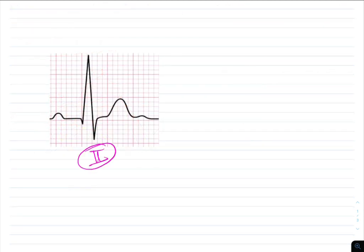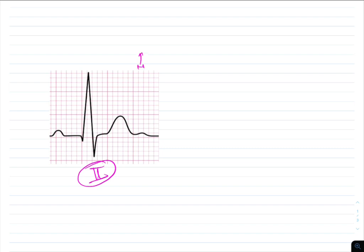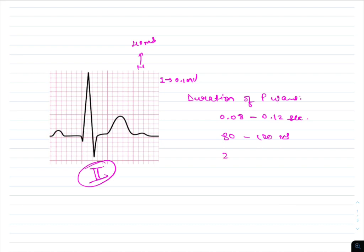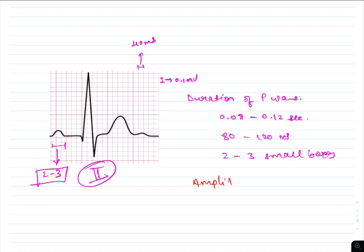In a normal ECG in lead 2, one small box equals 40 milliseconds and 0.1 mV. The normal duration of the P wave is 0.08 to 0.12 seconds, or 80 to 120 milliseconds, which corresponds to 2 to 3 small boxes on ECG paper. The normal amplitude of the P wave is around 0.2 mV, equal to 2 small boxes.